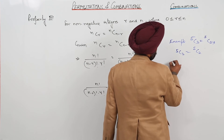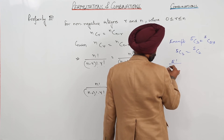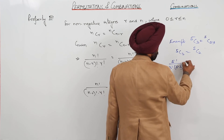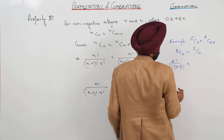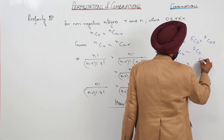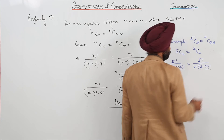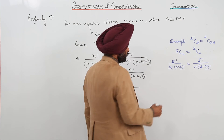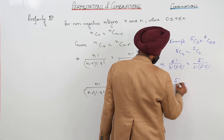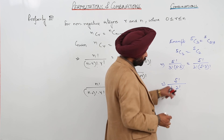Now let's check it. 5C3 becomes 5 factorial upon 3 factorial with (5 minus 3) factorial. And that side becomes 5 factorial upon 2 factorial times (5 minus 2) factorial. This becomes 5 factorial upon 3 factorial times 2 factorial, since 5 minus 3 is 2 factorial.